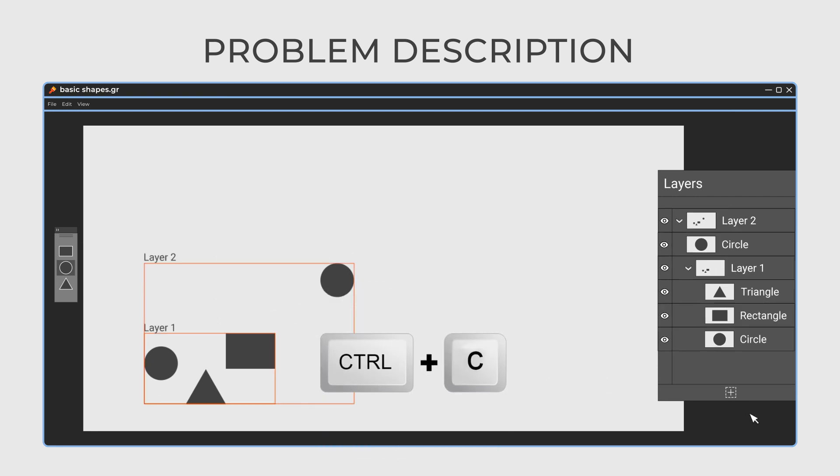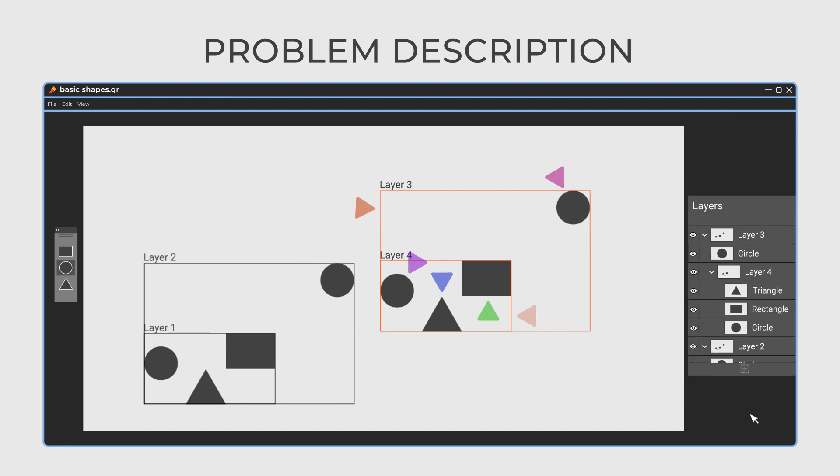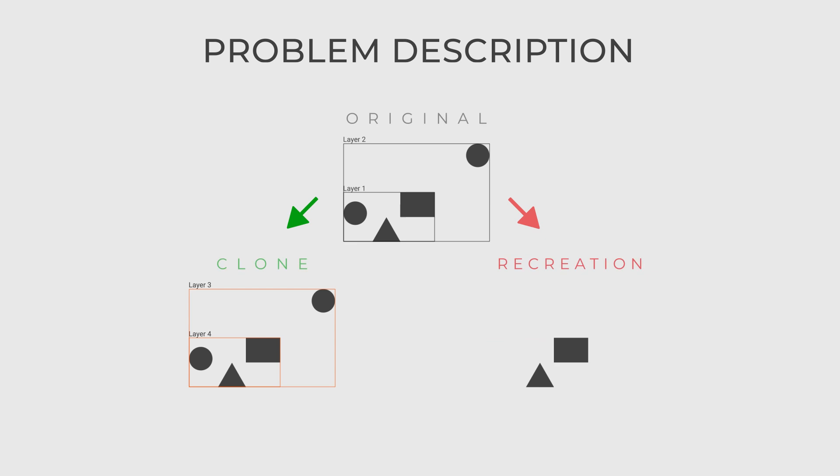You are working on a copy-paste feature, which means you want to be able to select a graphic element or layer and copy-paste it with all the layers and elements it contains. Of course, you can recreate all objects and layers from scratch, but this can be too complicated and expensive.